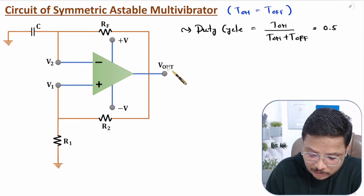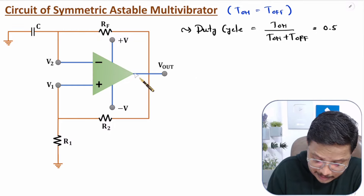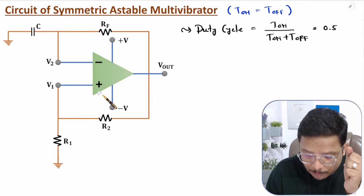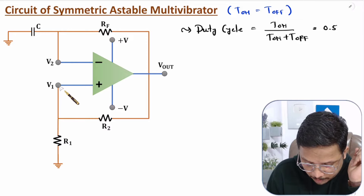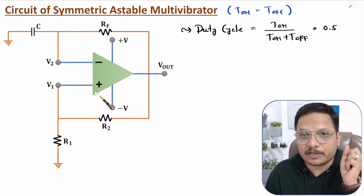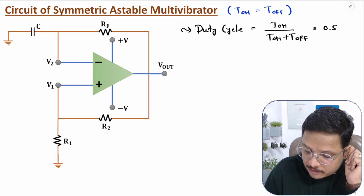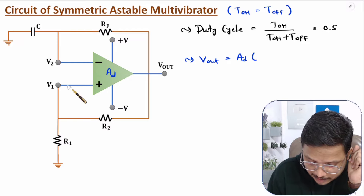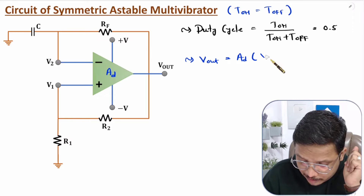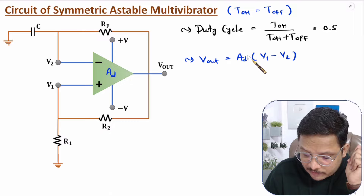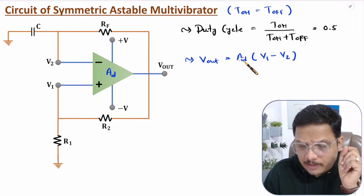To understand the working, first you need to understand what is the output. This operational amplifier is used in differential configuration, meaning the input is given to both input terminals — the positive terminal and the negative terminal. If the OPAMP has differential gain A_D, then V-out equals A_D into the differential input voltage V1 minus V2, where V1 is at the positive terminal and V2 is at the negative terminal. Remember, differential gain A_D is very high.